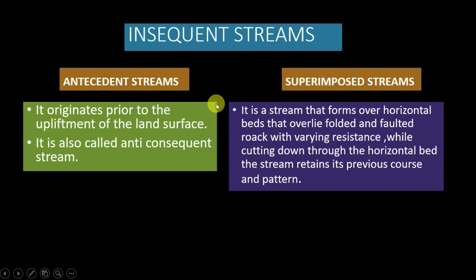Antecedent streams are those which originated prior to the upliftment of the land surface. If a river has developed in a particular region and the subsequent upliftment of the land area across the pre-existing river does not divert the course of the river, and the river maintains its previous course through downcutting its valley at a rate equivalent to the rate of upliftment — then that river is called antecedent or anteconsequent. The rate of upliftment and downcutting must be equal. Examples of antecedent streams include the Ganga, Ghagra, Kali, and Gandak rivers.